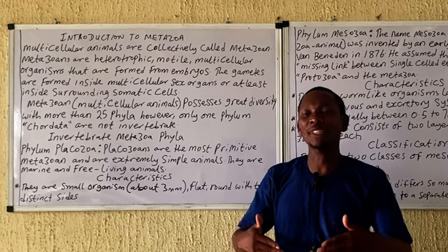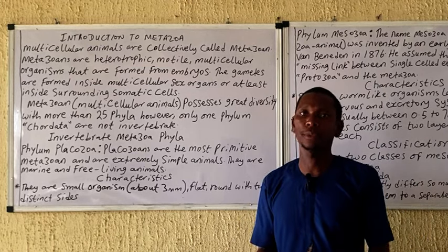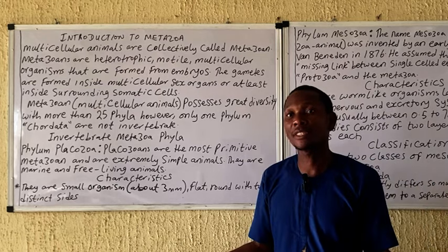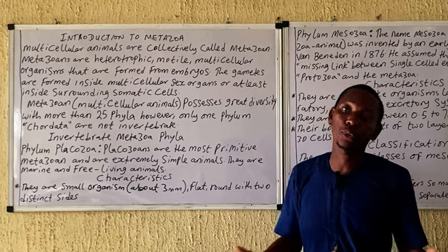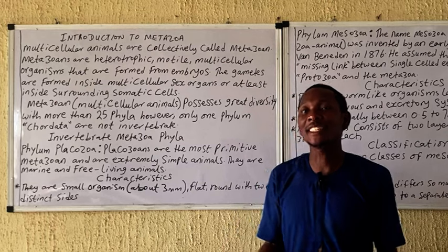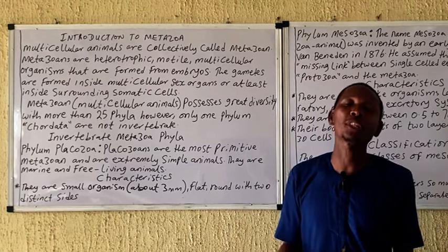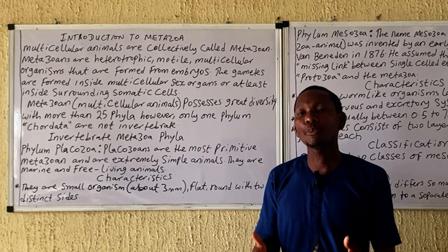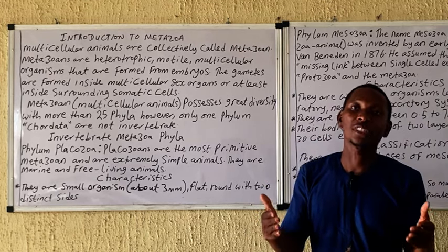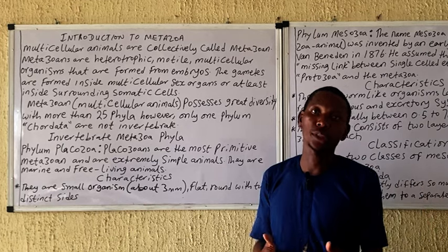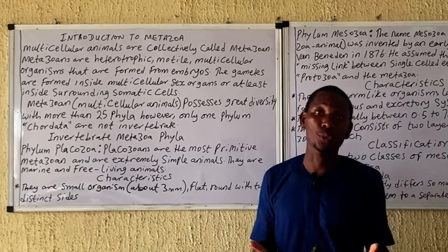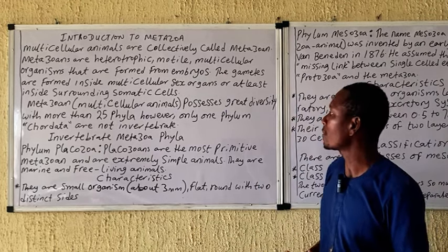Metazoa actually develop from the embryo. Their gametes develop from either the cells in the body — what we call the somatic cells — or from sex organs. They possess great diversity comprising more than 24 phyla. It should be noted that only one of these phyla actually has what we call the notochord, and this phylum is called the Chordata.